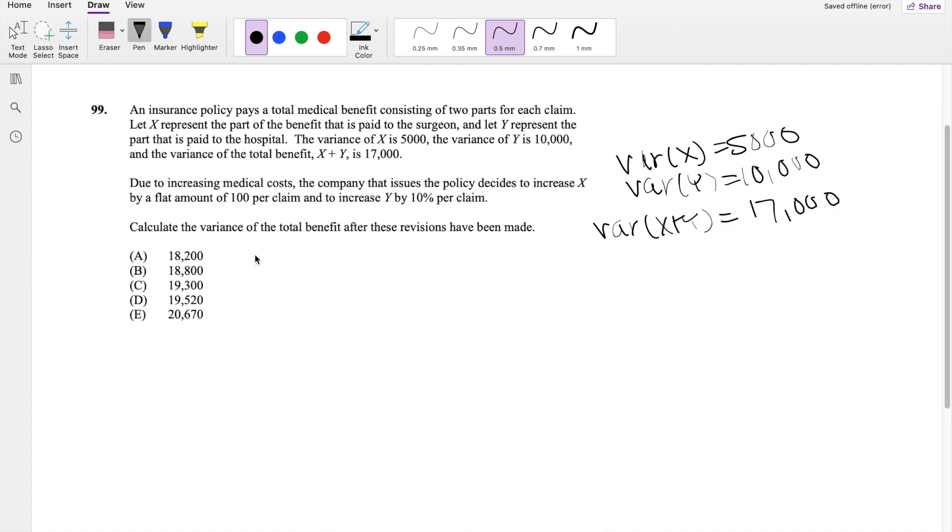And due to increasing medical costs, the company issues a policy that decides to increase x by a flat amount of 100. And then we're trying to find the variance of the revisions. So they're saying x plus 100, right? And y is increased by 10%, so if it's increased by 10%, we have to make sure we do 1.1 times y. Otherwise, if you just did 0.1, it just makes it smaller. So this is what we're looking for.